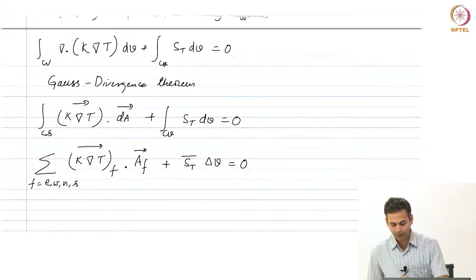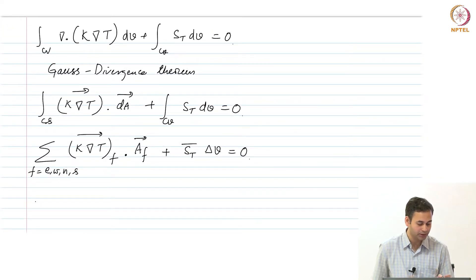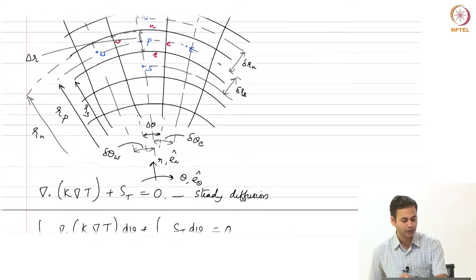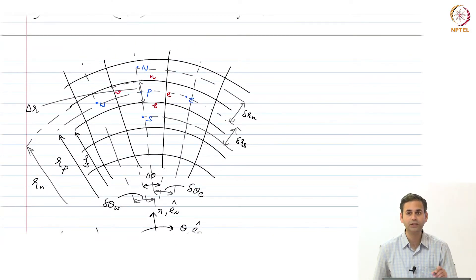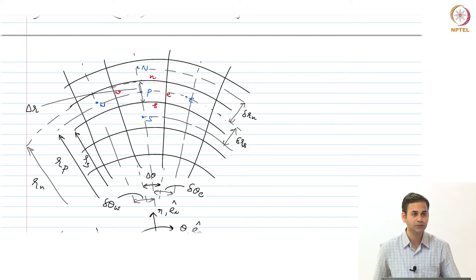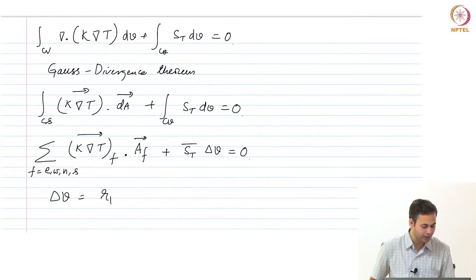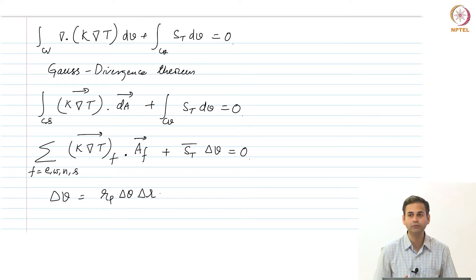We introduce two assumptions: first, the source value is calculated at the cell centroid and assumed constant over the entire cell; second, the k grad T value on the faces is assumed to be the face centroid value prevailing over the entire face. These convert the surface integral into a discrete summation: sum over faces (k grad T)_f dot A_f plus S_T_bar times delta_V equals 0. The delta volume for the P cell is r_P times delta_theta times delta_r.